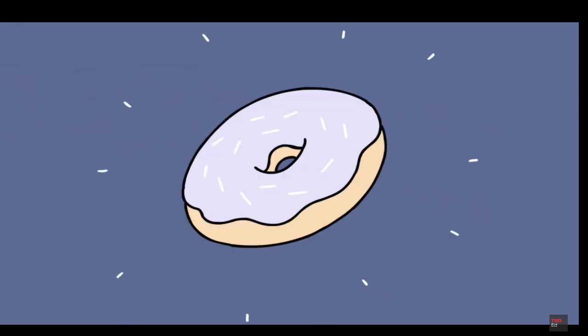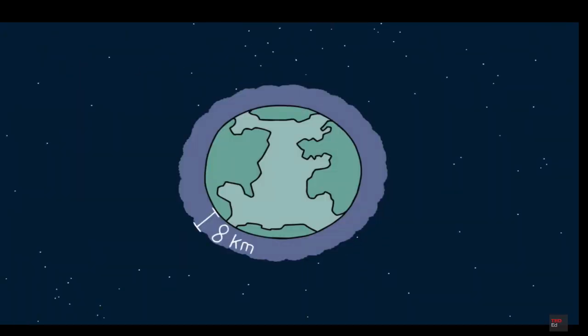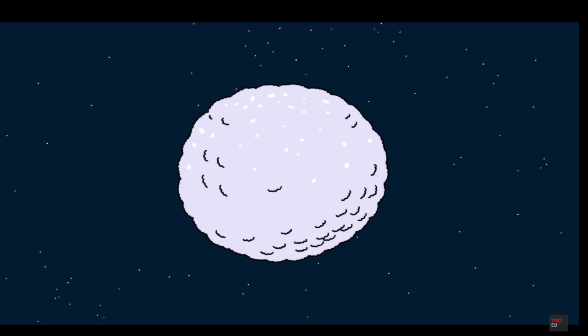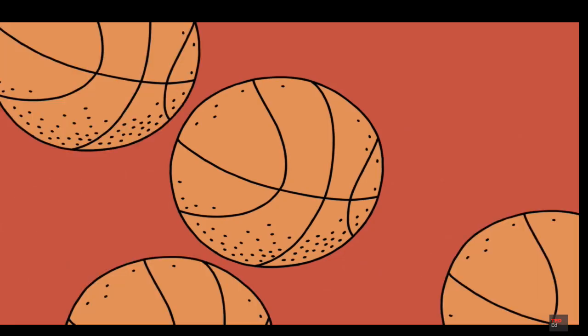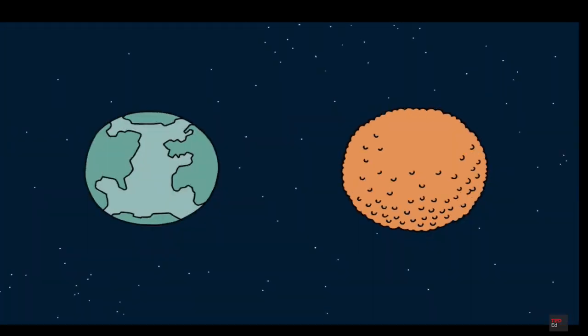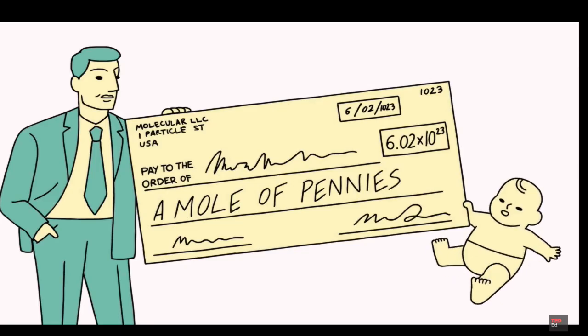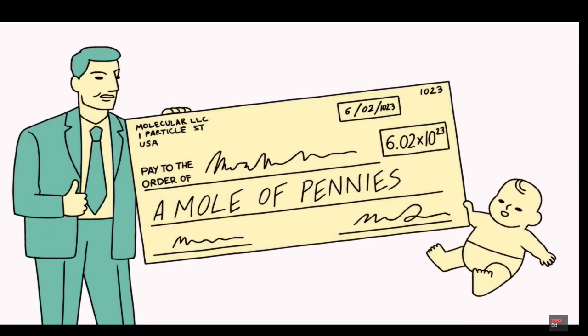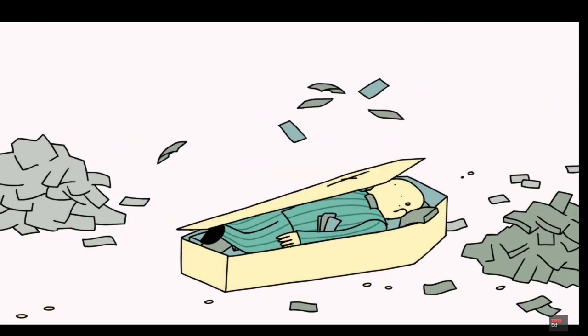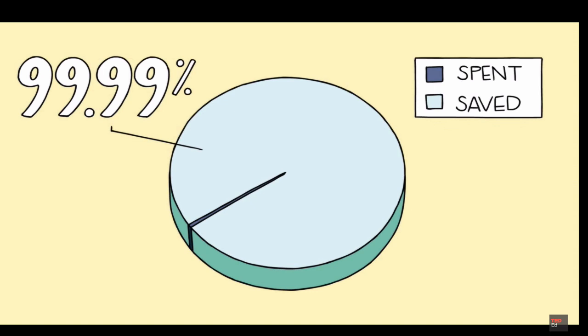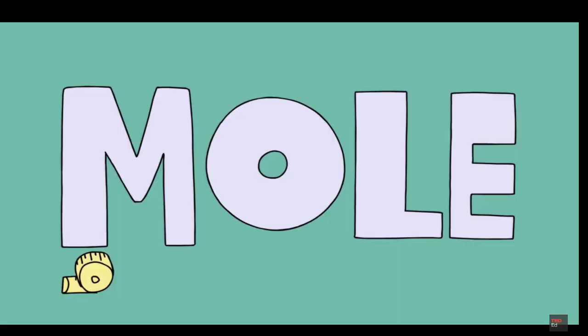Exchange the water particles for donuts. If you had a mole of donuts, they would cover the entire Earth to a depth of 8 kilometers, which is about 5 miles. You'd really need a lot of coffee for that. If you had a mole of basketballs, you could create a new planet the size of the Earth. If you received a mole of pennies on the day you were born and spent a million dollars a second until the day you died at the age of 100, you would still have more than 99.99% of your money in the bank.